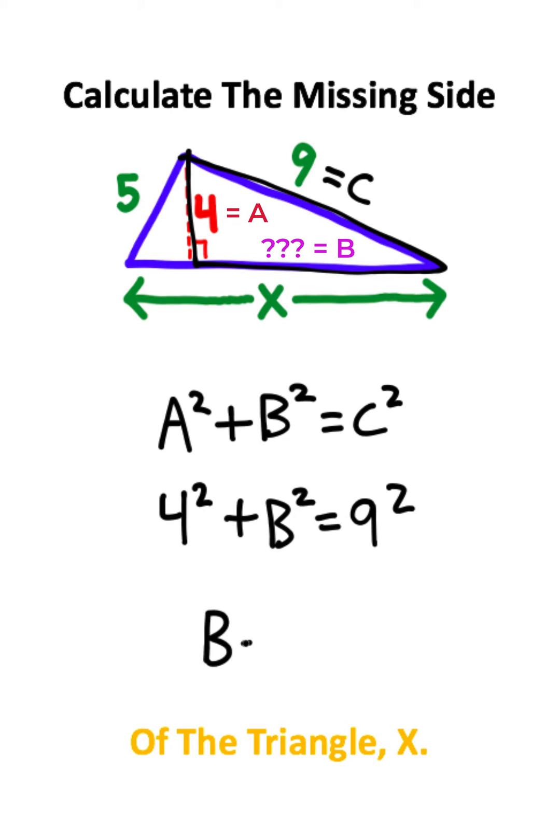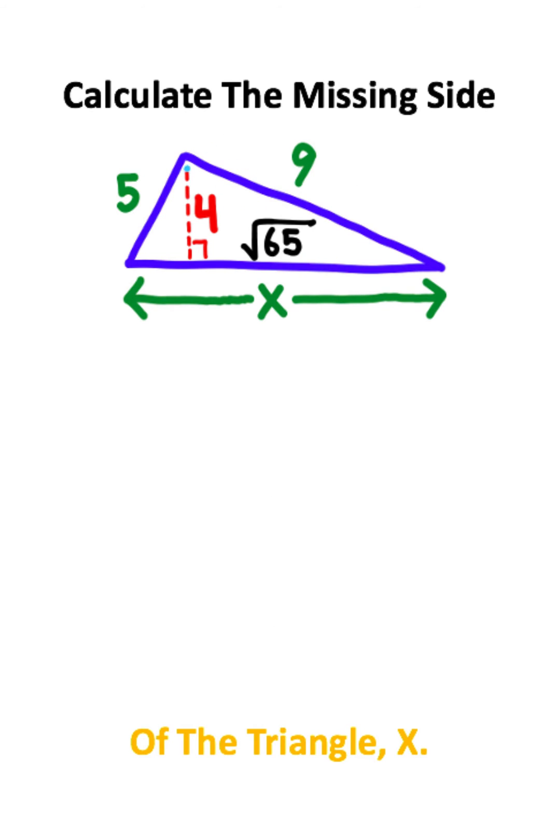If you solve for b, you should get that b is the square root of 65. Now that we've solved for all sides of this right triangle, we can do the same for the other right triangle.